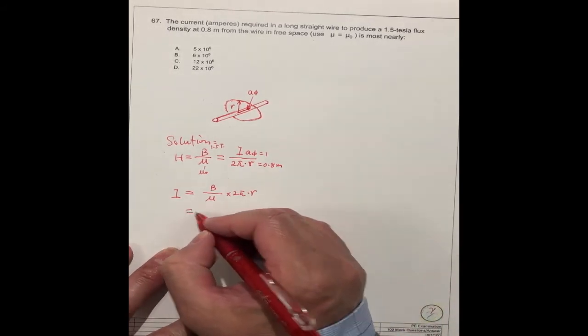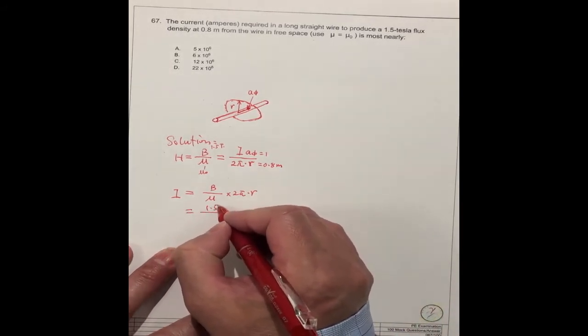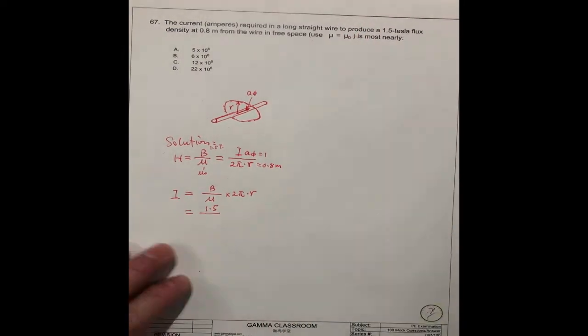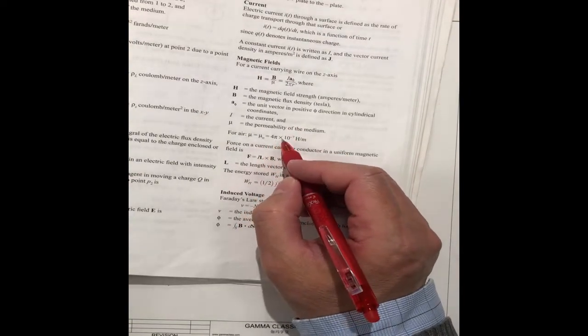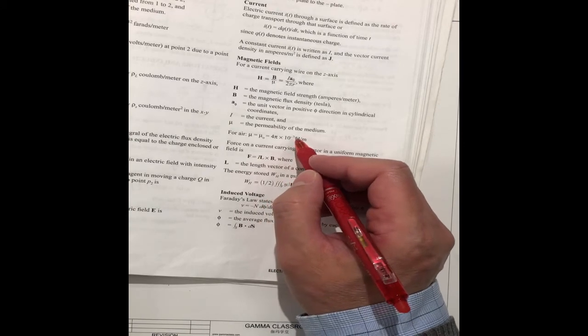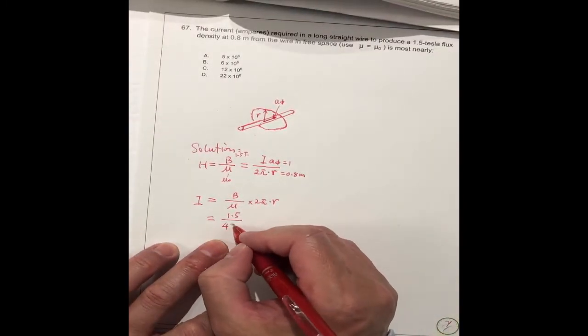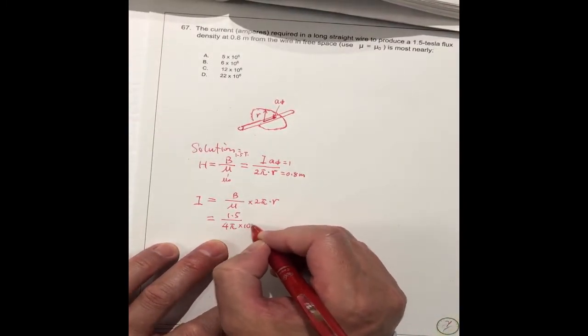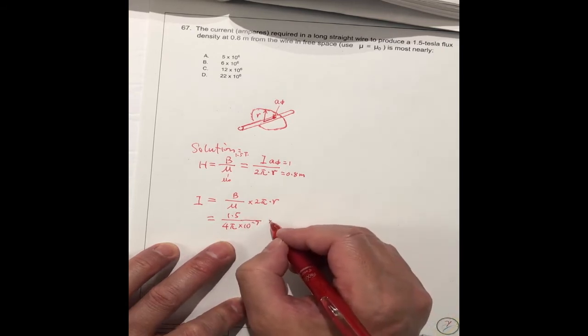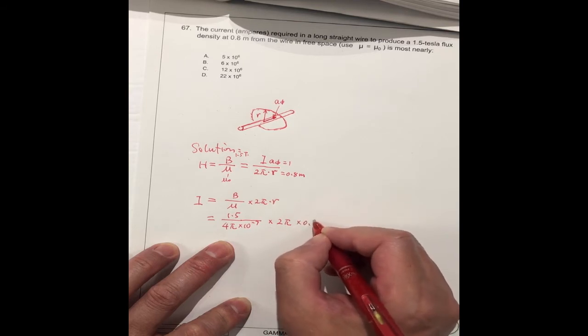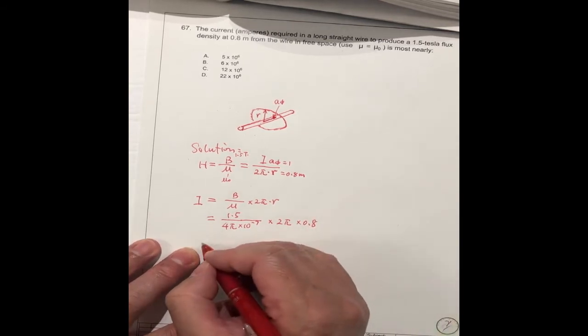And this is mu, mu zero. So here we already know mu zero is 4 pi times 10^-7 H per meter. So it's 1.5 divided by 4 pi times 10^-7 times 2 pi times 0.8. You can cancel this one, this is 2, cancel.